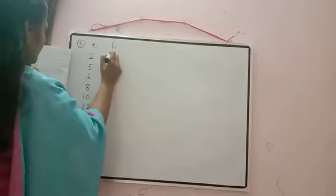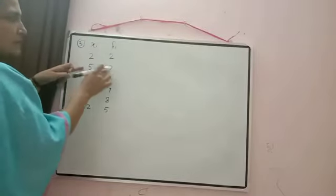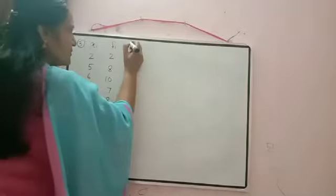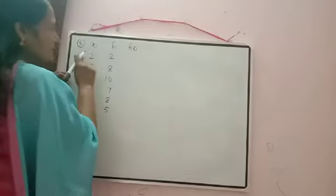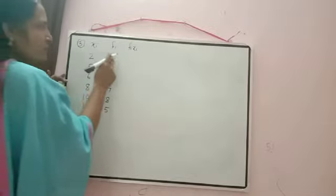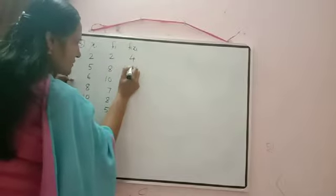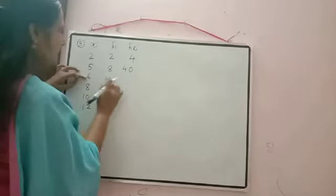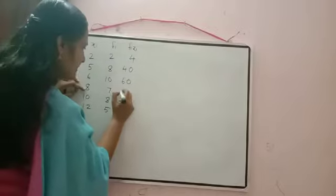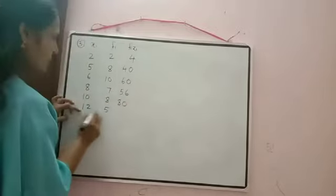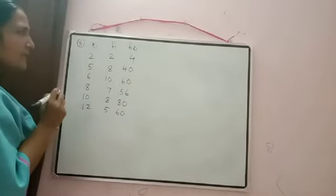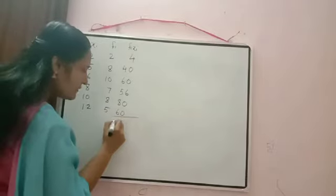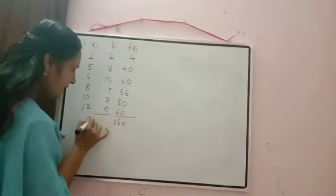First we calculate the mean, so the next column is fᵢxᵢ. Computing: 2×2=4, 8×5=40, 10×6=60, 7×8=56, 8×10=80, 5×12=60. Now we need Σfᵢ and Σfᵢxᵢ. For Σfᵢ: 2+8=10, +10=20, +7=15 wait — 8+2=10, 10+10=20, 7+8=15, 15+5=20, 20+20=40. So Σfᵢ = 40.